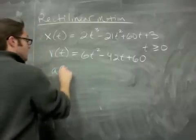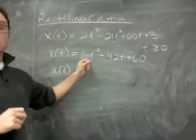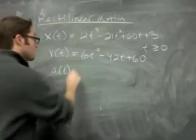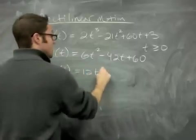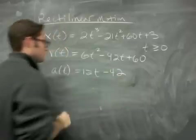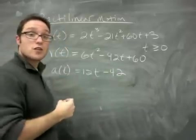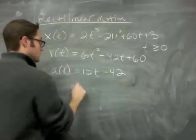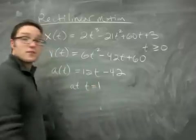And if I want to find the acceleration, I take the derivative of the derivative, or the second derivative. So I'm going to get 12t - 42. And now I can use these functions to answer questions, like what's going on after one second? t equals 1.